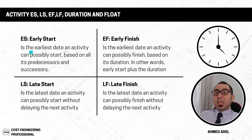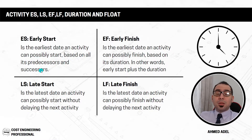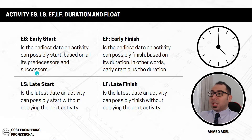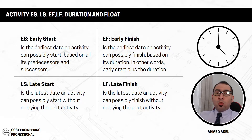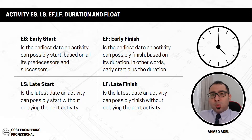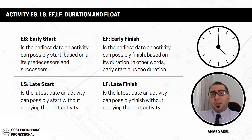The early start is the earliest date an activity can possibly start based on all its predecessors. A predecessor is the activity that comes before the current activity, and a successor is the activity that comes after. For example, to complete the first floor slab concrete works, the sequence might be: formwork first, then steel reinforcement, then cast the concrete. The predecessor of steel reinforcement is formwork.